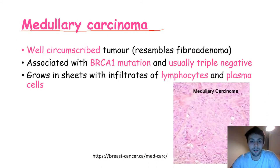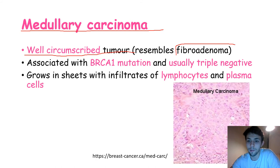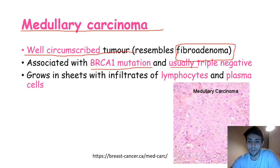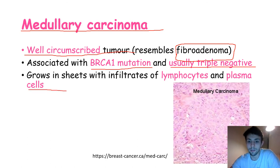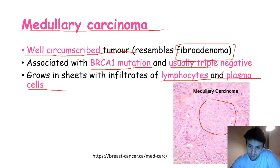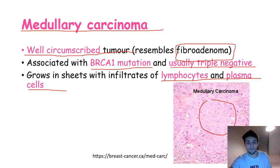Another type is medullary carcinoma. These are usually well-circumscribed tumors and can sometimes be confused for fibroadenomas. They are usually associated with BRCA1 mutations and are most often triple negative, which as discussed is usually a more aggressive form. Histologically, it grows in sheets with infiltrates of lymphocytes and plasma cells. It's recommended to search for other histological images of medullary breast cancer.